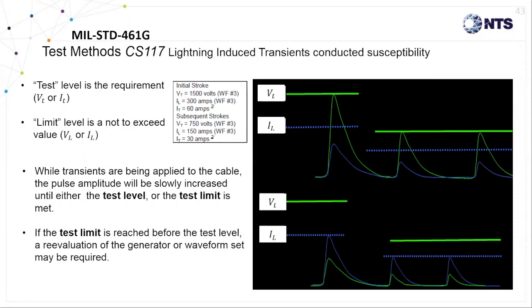As the amplitude is increased, the waveform test level, either voltage as VT or current as IT, must be reached before the waveform limit, which is VL or IL. If the limit is achieved before the test level is reached, then the test is halted in order to prevent overstressing and possible damage to the EUT. The waveform set at that point must be re-evaluated to match the type of interface being tested or cabling being tested.